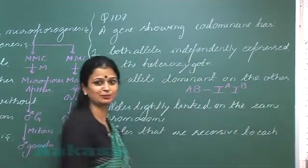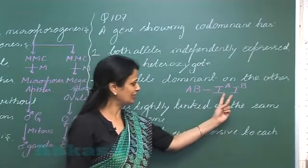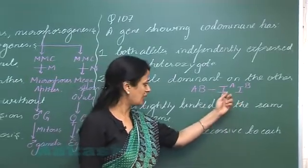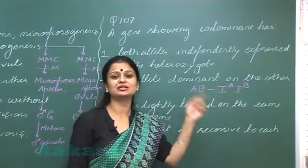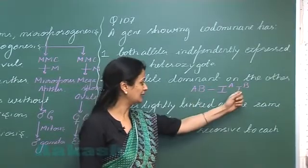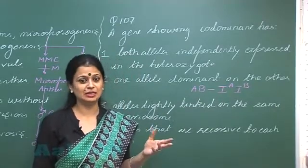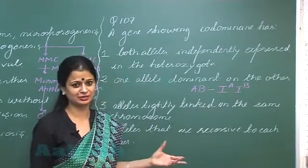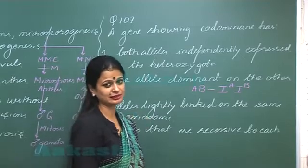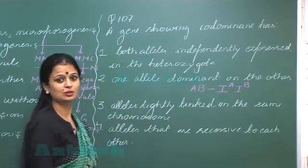A person having AB blood group has this genotype. The two alleles present are IA, which forms antigen A, and IB, which forms antigen B. Both IA and IB show their expression in the heterozygous condition. This is called co-dominance.